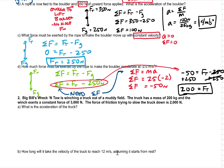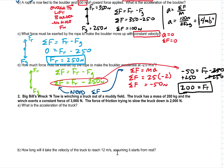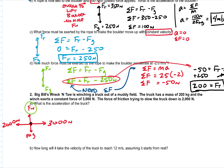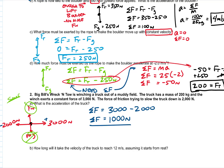We have a new problem: a truck with a mass of 200 kilograms. A winch is pulling it with 3,000 newtons forward, and there's 2,000 newtons of friction pulling back. Weight and normal force are equal and cancel, so we only look at the x direction. Net force is 3,000 minus 2,000, which equals 1,000 newtons. Acceleration is net force over mass: 1,000 over 200 equals 5 meters per second squared.